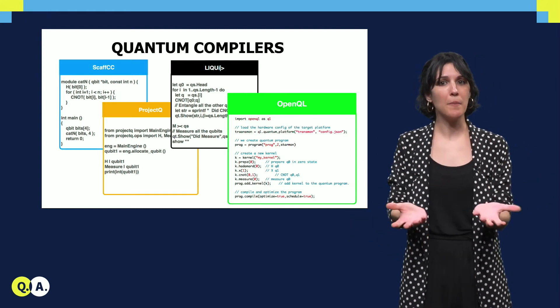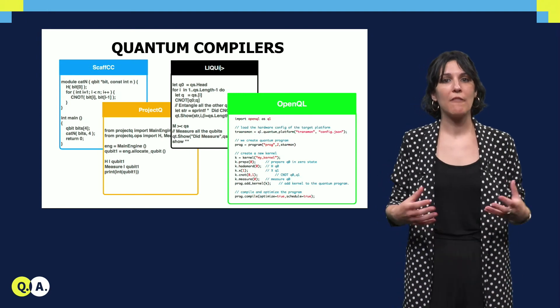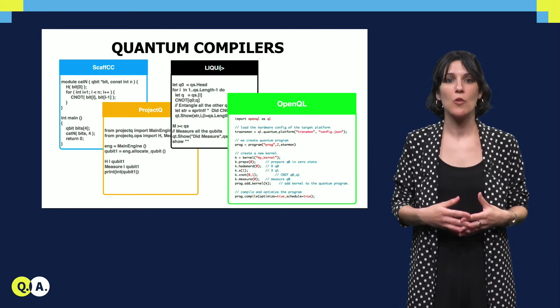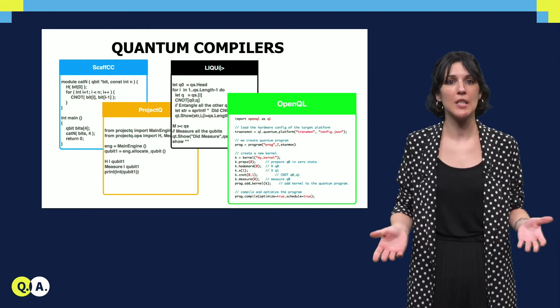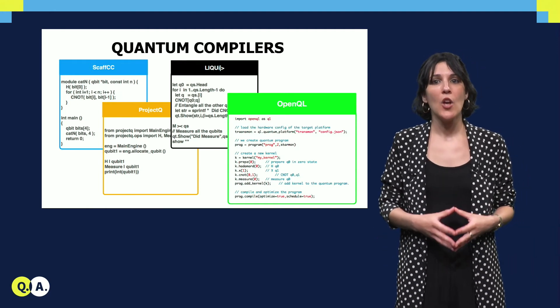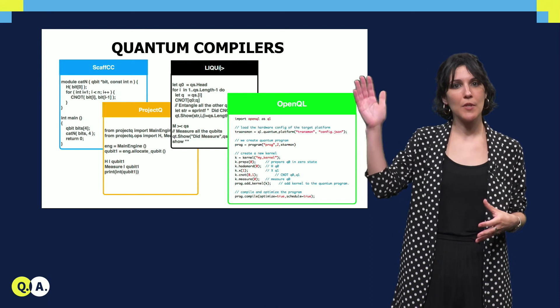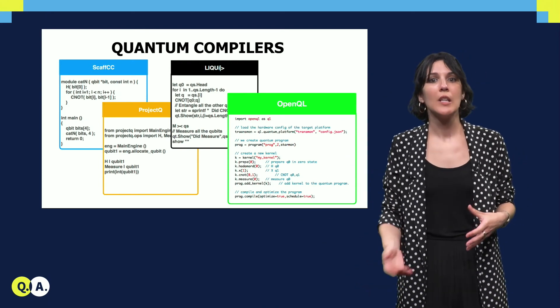So just to wrap up, in this lecture we have learned that in order to express our quantum algorithm, a high-level programming language is needed. A compiler will translate this high-level description into executable code that will make the required transformations to obtain a circuit that is runnable on your quantum chip.